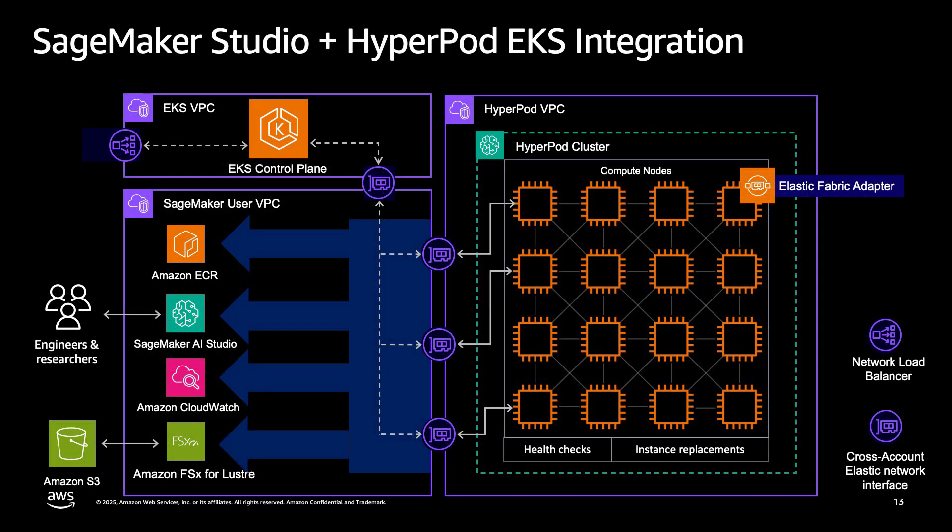The architecture and workflow previously described are also valid for the integration of SageMaker AI Studio with HyperPod with EKS integration. In particular, we can use the shared FSx volume to save data and code to be executed in containers during the execution of pods. Now let's see how it works in a demo — let's jump into the AWS console.